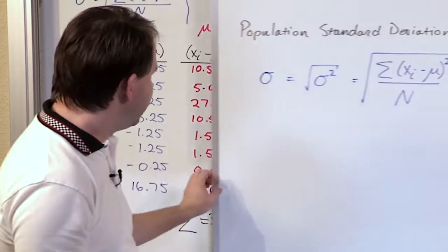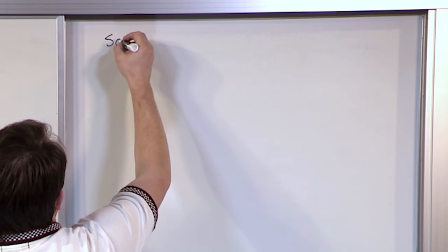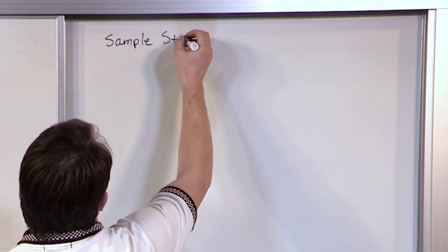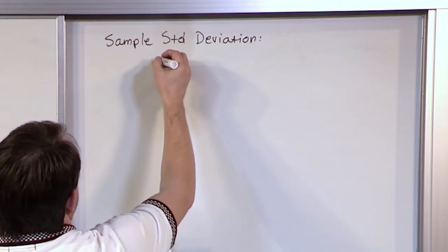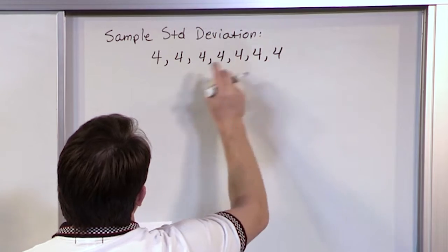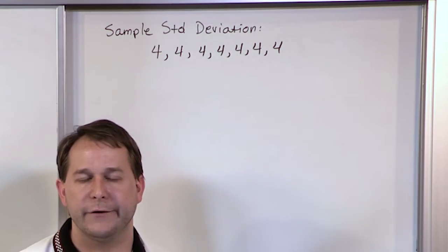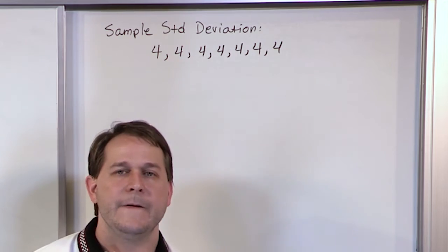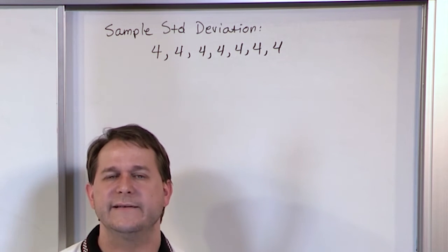Now I want to do another problem — I almost call it a trick problem. It's not really a trick, but if you understand standard deviation well, you could probably tell the answer without any calculations. Let's find the sample standard deviation of the following data: 4, 4, 4, 4, 4, 4, 4 — seven fours. This could be the age of toddlers in a daycare — everybody's four years old, everybody is the same age. What do you think the standard deviation of this data set is going to be?